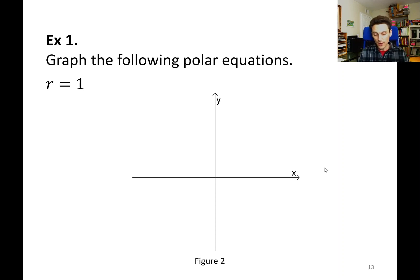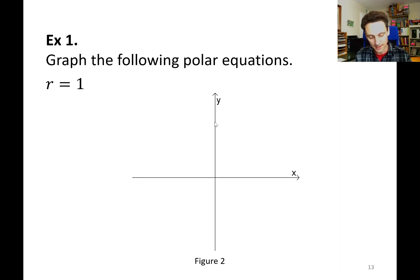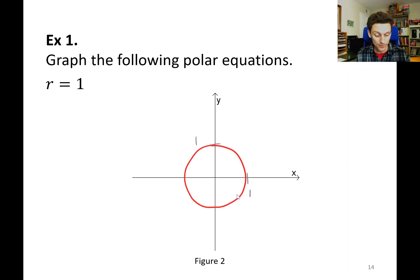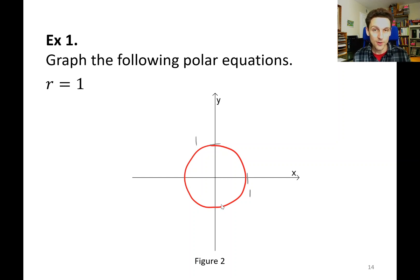Let's look at Example 1: graph the following polar equations. r equals 1 is a polar equation because it contains one of the polar variables. In Figure 2, the coordinate system has r's as concentric circles from the origin and thetas as lines through the origin. So r equals 1 would just be a circle with radius 1 centered at the origin. There's no theta, so theta can be anything from 0 to 2 pi — the collection of all points where r equals 1.